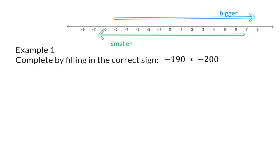Example one, complete by filling in the correct sign. Here we have two negative values. Minus 190 is less negative than minus 200, which means it is more to the right, and therefore bigger than minus 200.